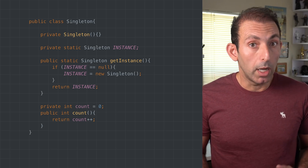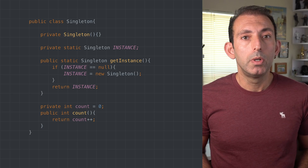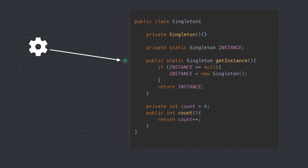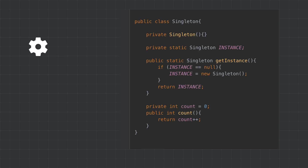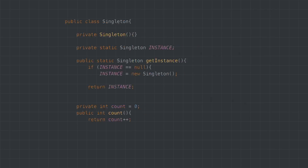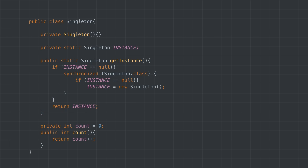This code seems fine, but there is a major issue — this code is not thread safe. At any time, one thread can pass the if check but be put on hold while another thread creates the singleton. When the first thread resumes inside the if block, it creates another instance. To fix the threading issue, you can use double-check locking. With double-check locking, if the instance is null, the synchronized keyword creates a lock, and the second check ensures the instance is still null. Only after then is the singleton instance created.